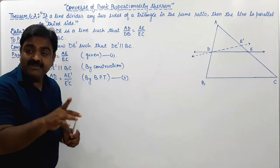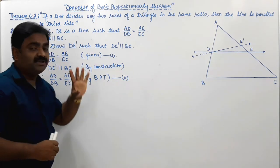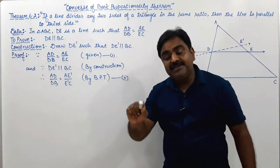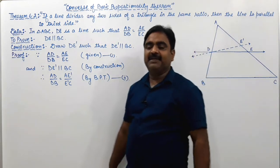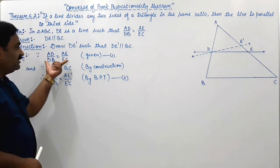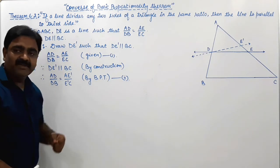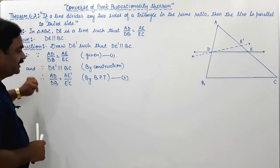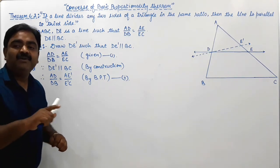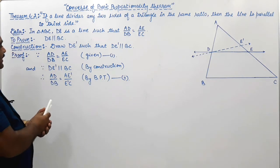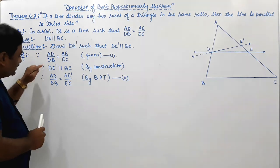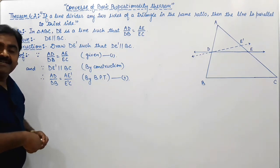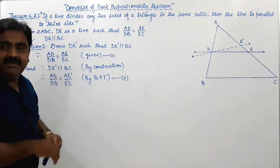First of all, whatever you are writing, give the reason. The information you are giving — the reason must be written. Okay. So equation 1 was given, equation 2 came by Thales' theorem. Now you need to compare equations 1 and 2. When we compare, what we get: this is AD upon DB and this is also AD upon DB — the left side of both equations is equal.